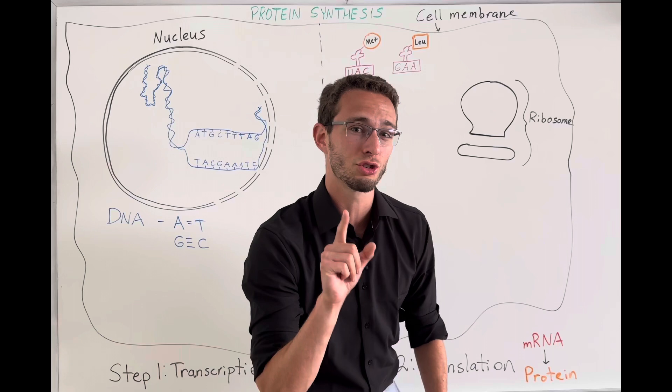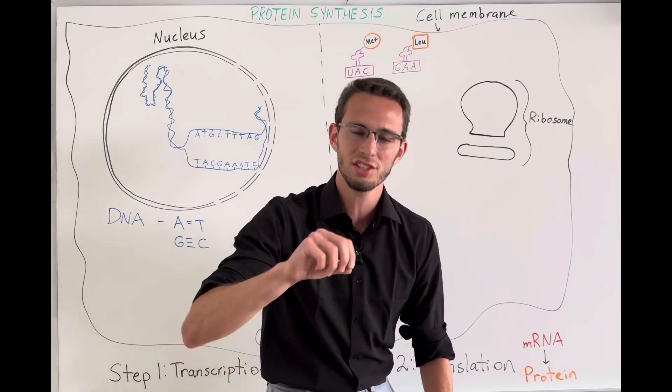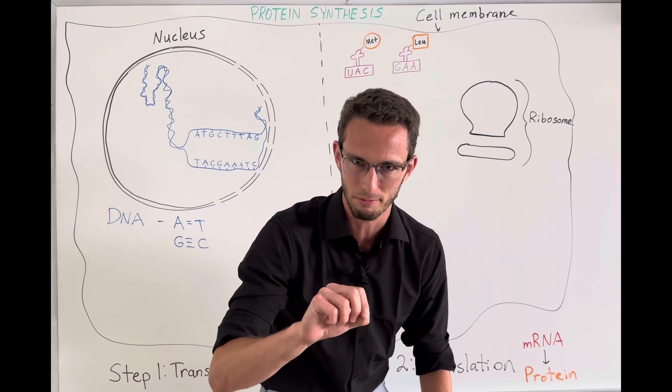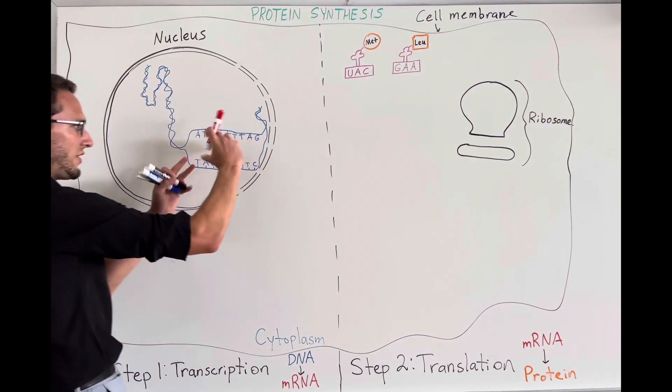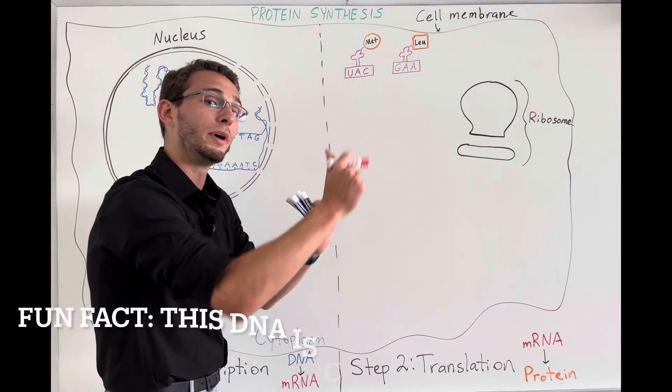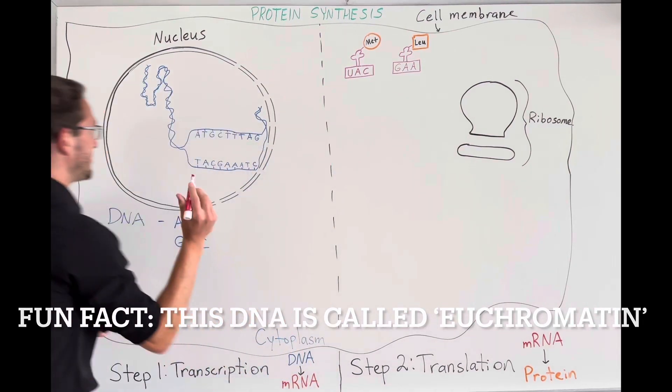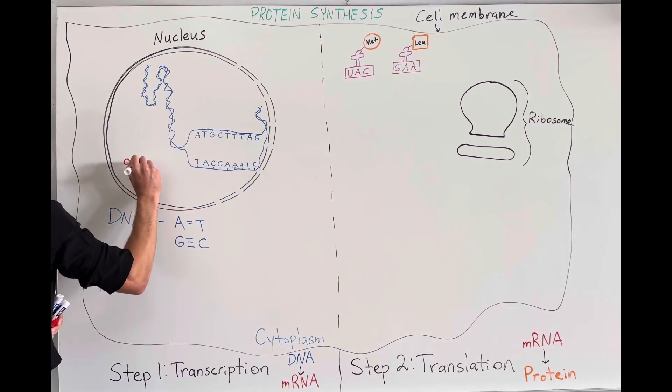So what do we need to do? We need to transcribe the message. And this is where mRNA is going to come from. So check this out. In the nucleus, some of the DNA will be unwound, opened up, for an important enzyme to get in here.